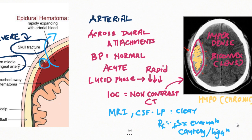Clot size and midline shift are important factors — the expanding hematoma pushes brain structures toward the midline, and this midline shift determines whether surgical evacuation is needed. Comatose patients need intracranial pressure monitoring. Anticoagulants should be avoided in these cases. In part 2 of this series, we will discuss subdural hematoma.